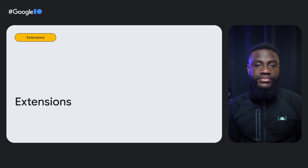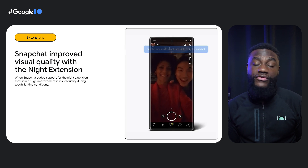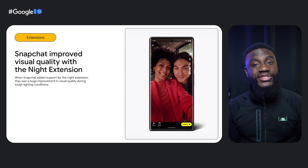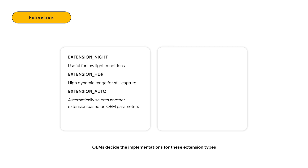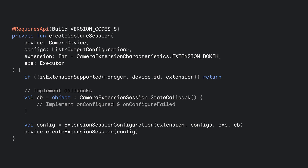Finally, let's talk about extensions. Device manufacturers can expose special capabilities like night mode and bokeh to third-party developers through camera extensions. For instance, Snap has seen success using the night extension within their app — their use of the night extension dramatically improved image quality during tough lighting conditions. Here's a list of extensions currently available: Extension Night, useful for low light conditions; Extension HDR, high dynamic range for still capture; Extension Auto, which automatically selects another extension based on OEM parameters; Extension Bokeh, focused subject with a blurry background; and Extension Face Retouch.